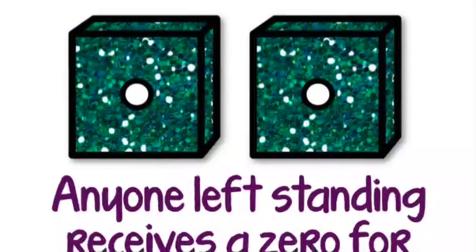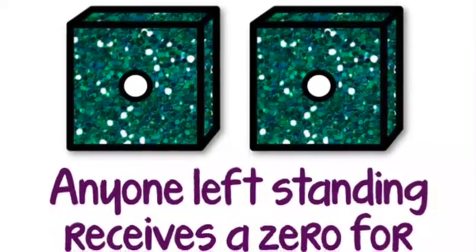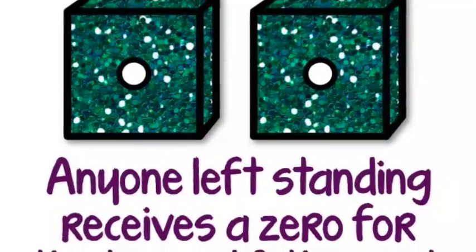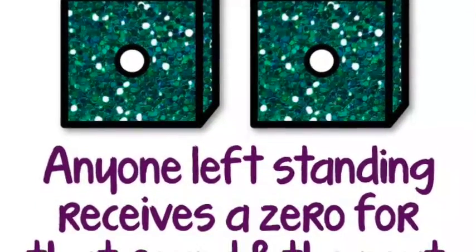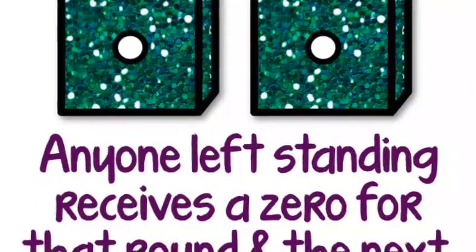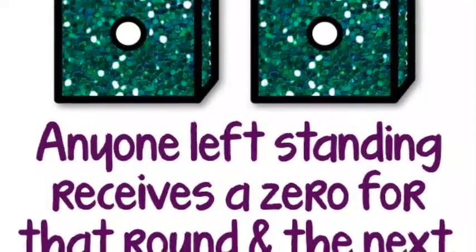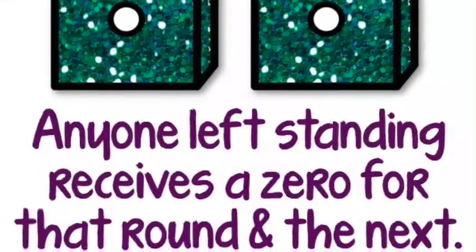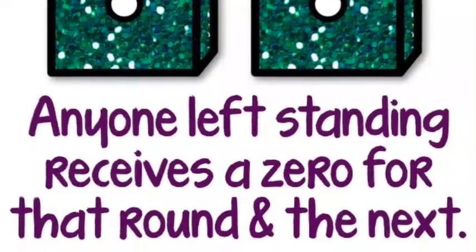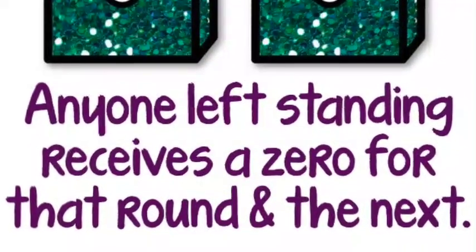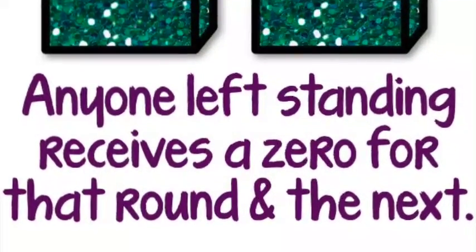If snake eyes are rolled instead, anyone standing not only receives a zero for that round, but receives a zero and is automatically out for the next round as well.